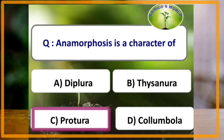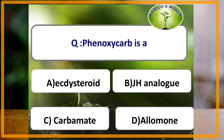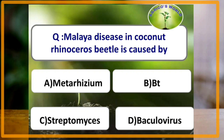That is, the 8th to 12th abdominal segments are added during post-embryonic development. Phenoxycarb is a juvenile hormone analogue.